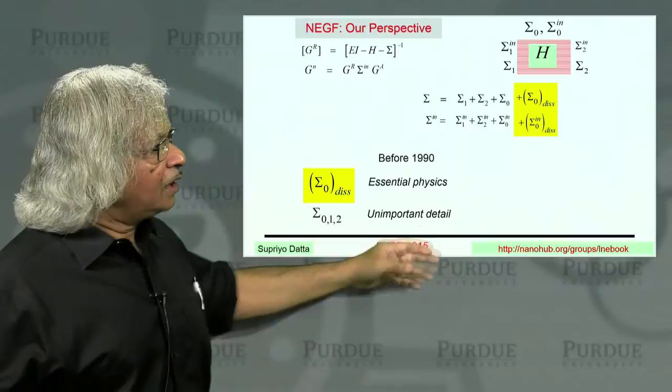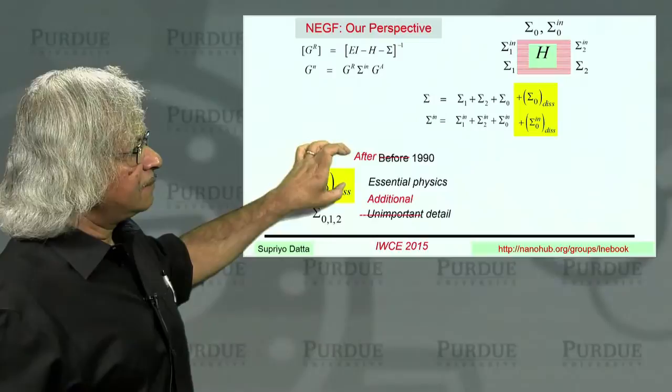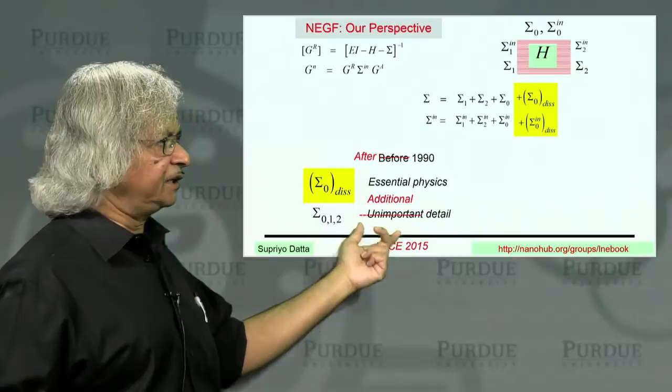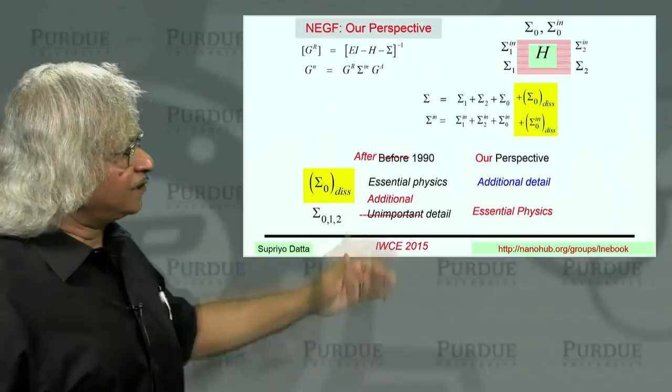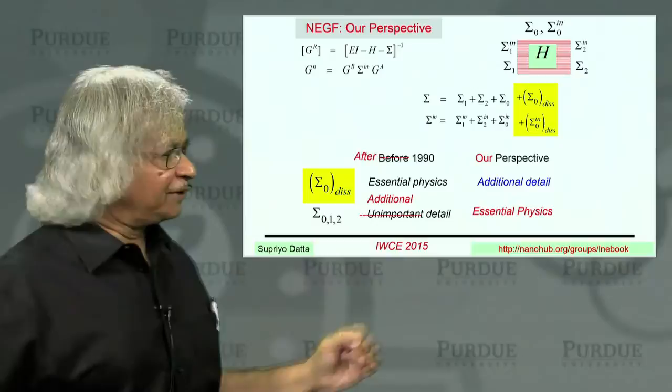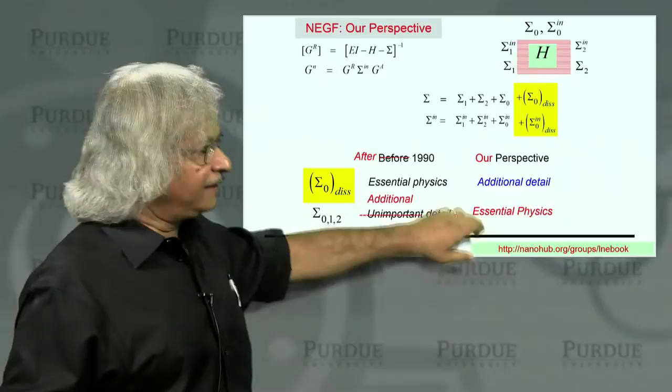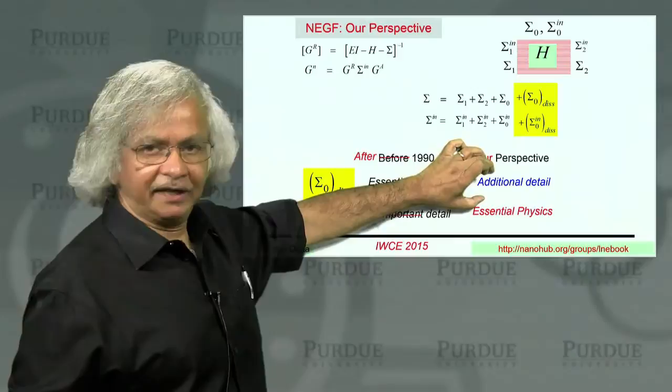Now, with the advent of mesoscopic physics, what happened is, people recognize the importance of contacts. And so instead of being regarded as an unimportant detail, it is now considered an additional detail that needs to be included. But people still think of this as the essential physics. So the new perspective that I have been advocating is that given what we know today, one should turn this around. And one should view this as the essential physics. And the other interactions being more additional detail that you put in later.